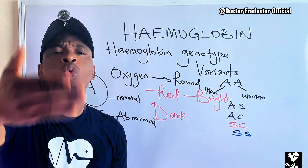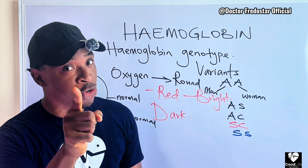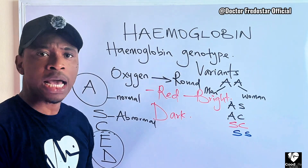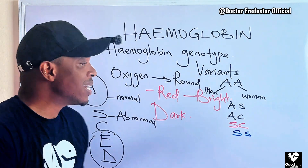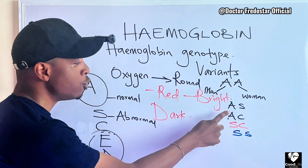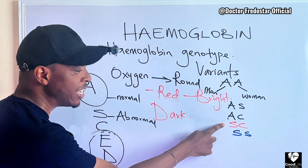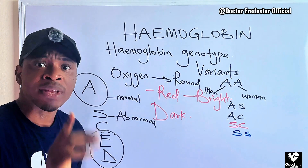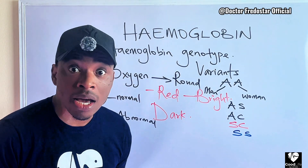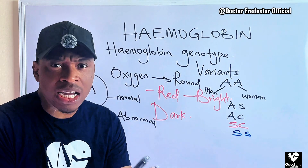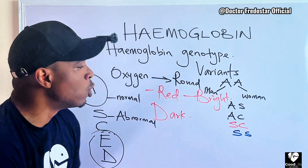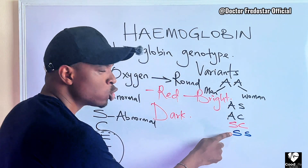When you want to marry, we tell you: check your hemoglobin genotype. Know whether you are AA, AS, AC, SC, or SS — make sure you check. And then tell the person you want to marry. Because if you don't check, you might be compatible but not know it, and you could give birth to an SS child.